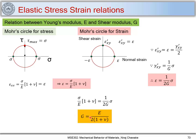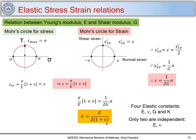So we get the relation between shear modulus G and Young's modulus E. From this, G is dependent on Young's modulus and Poisson's ratio. We have four elastic constants: E, mu, G, and K. Both G and K are dependent on E and mu, so only two are independent constants — E and mu — for isotropic elastic materials.